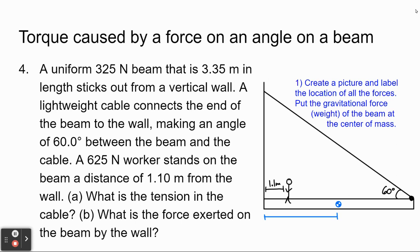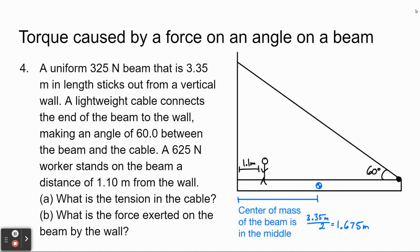The first thing to notice is that the beam itself has weight. Remembering what we discussed about center of mass, we want to assume all the mass for the beam is at the center of mass. Because the beam is uniform — the same density throughout — the center of mass is in the middle, which is halfway down the 3.35 meters, at 1.625 meters.